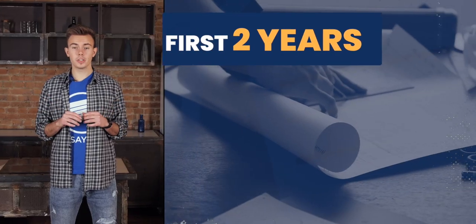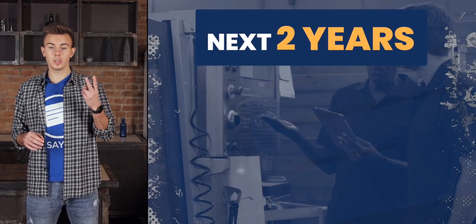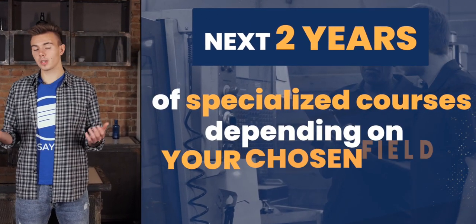Most engineering degrees take four years to complete. The first two years are dedicated to core courses focusing on engineering principles, followed by another two years of specialized courses, depending on your chosen field.